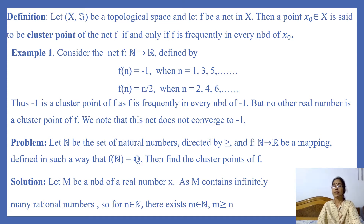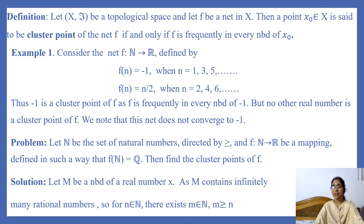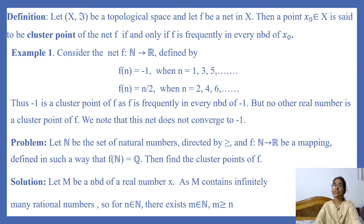This net does not converge to -1 because we cannot find any natural number such that after that natural number, the images of all elements under f belong to the interval (-2, 0). So -1 is the only cluster point of this net.